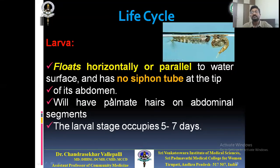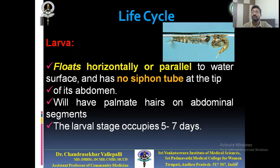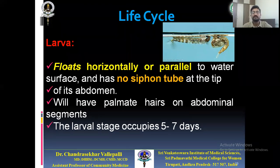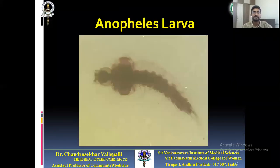Anopheles larvae float horizontally or parallel to the water surface. There is no siphon tube at the tip of the abdomen — this is the distinguishing feature from Culex larvae. Anopheles larvae also have palmate hairs on abdominal segments. This larval stage lasts 5 to 7 days.